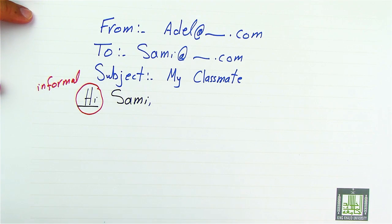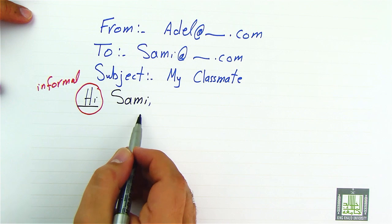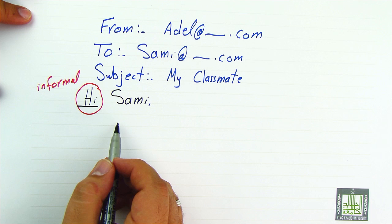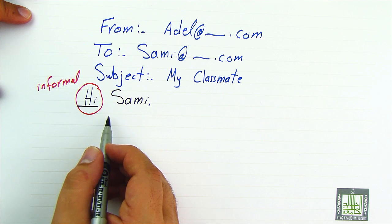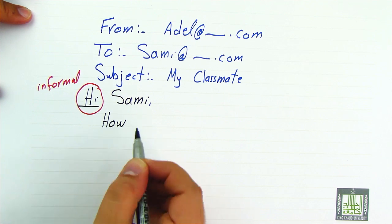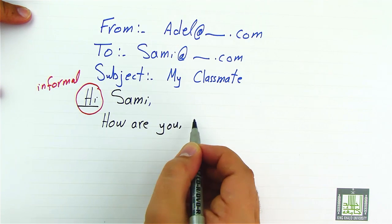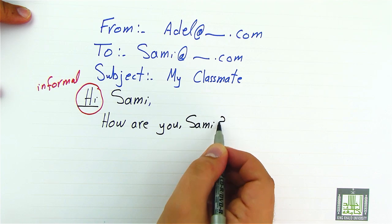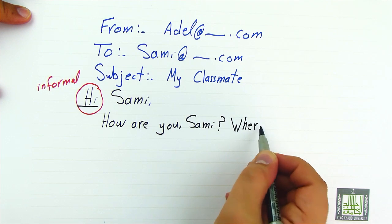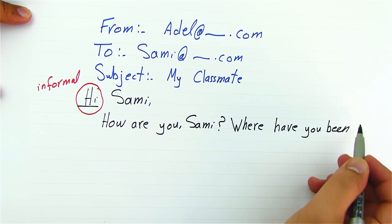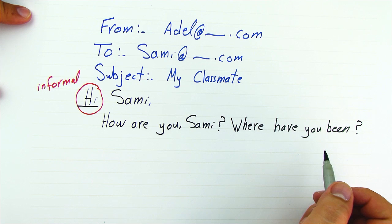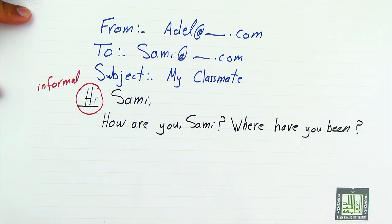We write 'Hello Sammy,' then we skip one line and start the message by addressing Sammy himself with a remark. For example, we ask: 'How are you, Sammy? Where have you been?' This shows you are interested in Sammy's absence and you are concerned because you haven't heard from him for a long time.